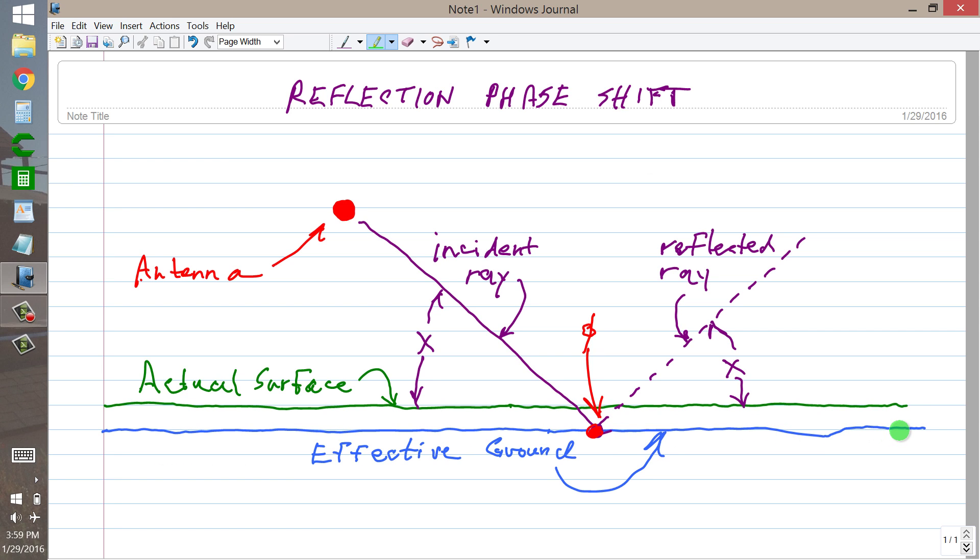In another video regarding low dipoles for field day, I said that the phase shift angle here, phi, that's what that little small zero is, phi represents phase angle, is 180 degrees.